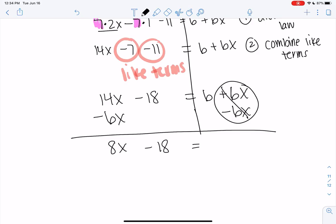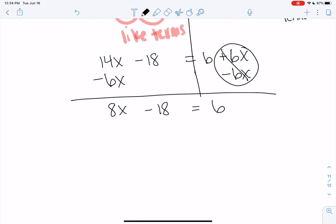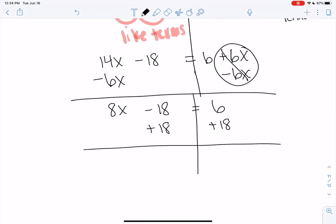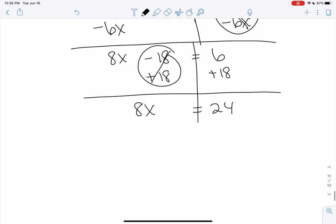Minus 18 is still there. Equals 6. We still need to move the 18. The opposite of negative 18 is positive 18. As long as we're doing it to both sides again, we can do this. So I only have 8x on the left side. And I have 24 on the right side. 6 plus 18.